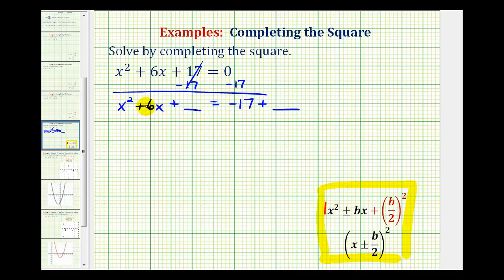So looking at our example, notice that b is equal to 6. So b divided by 2 squared is going to be 6 divided by 2. That's 3 squared, which is equal to 9. So we'll have to add 9 here to make this a perfect square trinomial. And of course if we add 9 to the left side of the equation, to maintain equality, we have to add 9 to the right side as well.